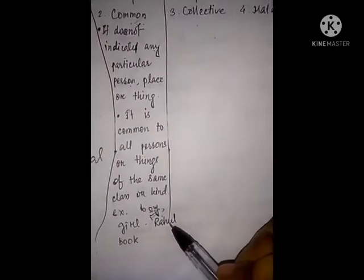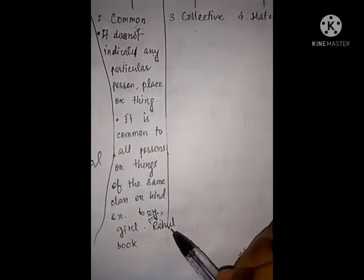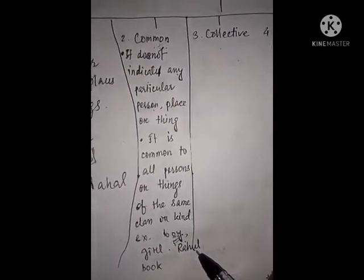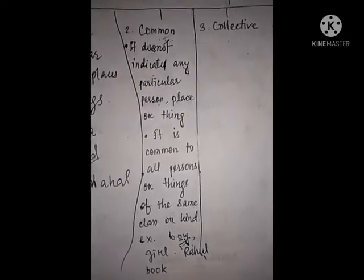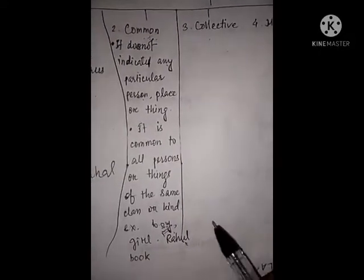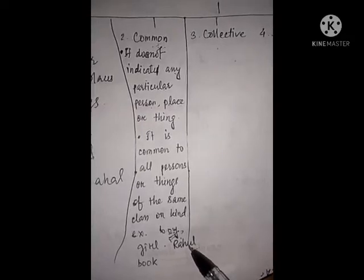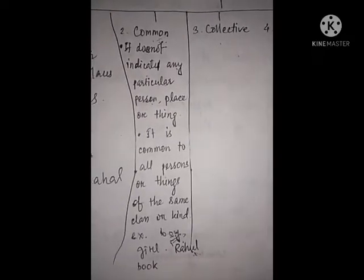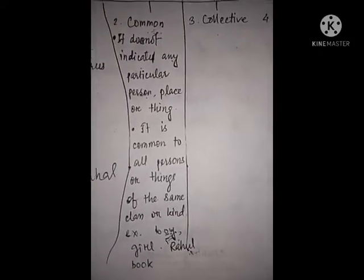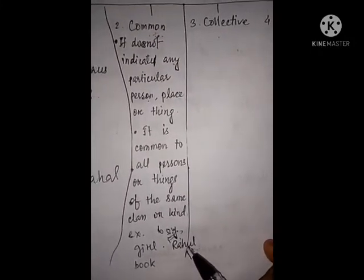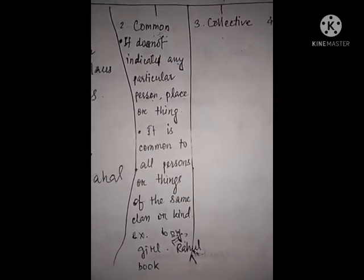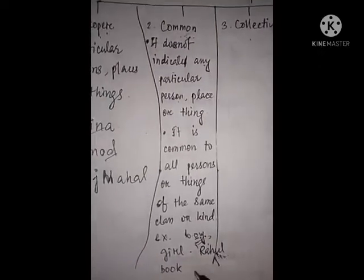Let's take the name of a boy — Rahul. If we take this name Rahul, it does not indicate a particular Rahul — it indicates all the Rahuls present in the world. It is common to all boys, because Rahul is not only one person's name. It may be a hundred persons have the same name. So if we say Rahul, it indicates all the boys of that class. Therefore it is known as common noun.